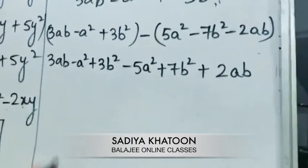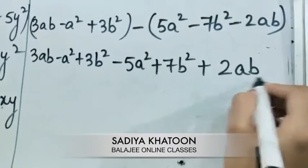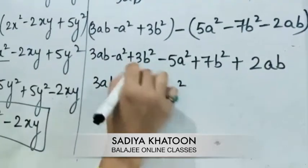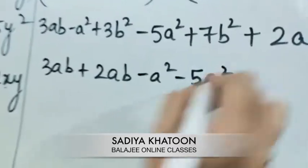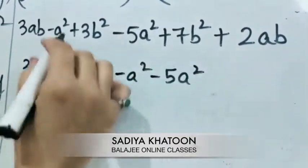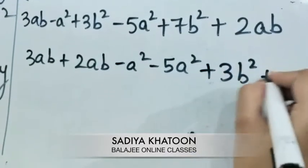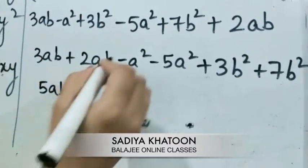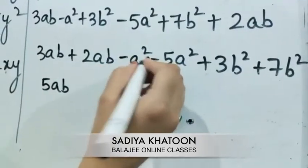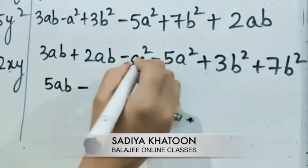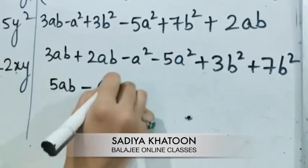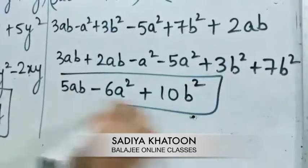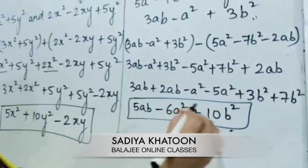Now arrange the like terms together. The ab terms are 3ab and plus 2ab — bring them together. For the a squared terms, we have minus 5a squared, giving minus 6a squared when combined. For the b squared terms, plus and plus gives plus, and 3 plus 7 is 10b squared. So the final answer is 5ab minus 6a squared plus 10b squared.